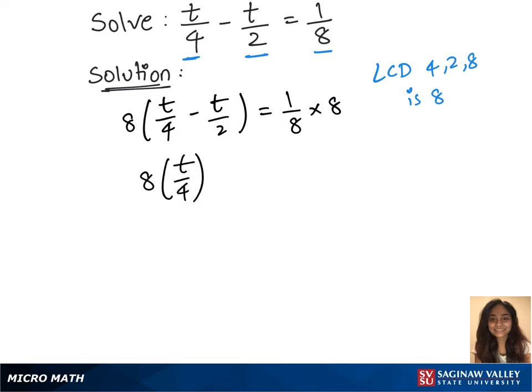8 times t/4 minus 8 times t/2 equals to 8, and it gets cancelled, giving us 1. Our next step will be 4 cancels 8 with 2, that gives us 2t minus, 2 cancels 8 with 4.